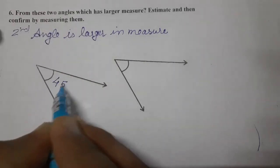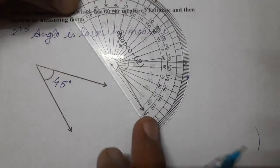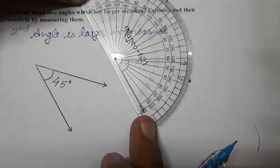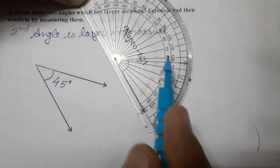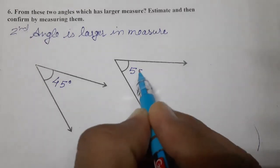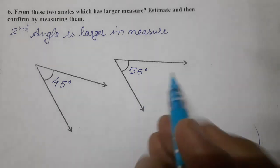So write 45, this one. And second one, this one, let's see this one also. So this one is coming 55. See, 50 or 60, between mark 55. So write 55. So which is larger? Second one is larger.